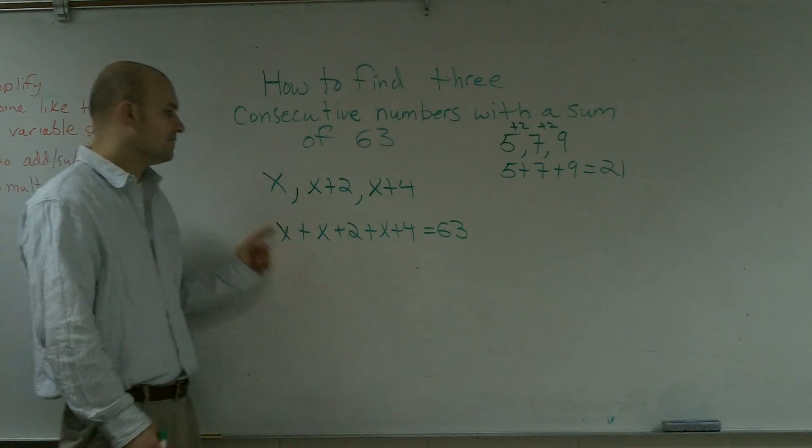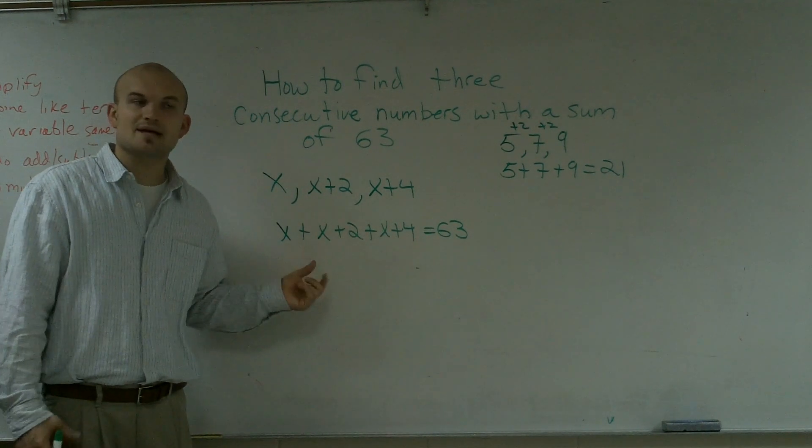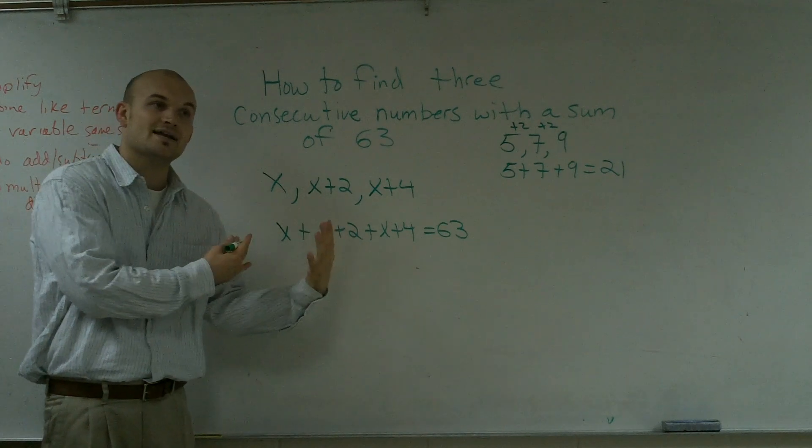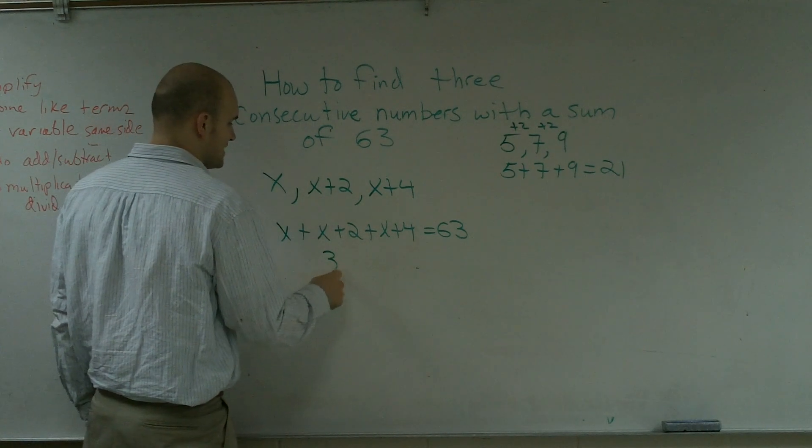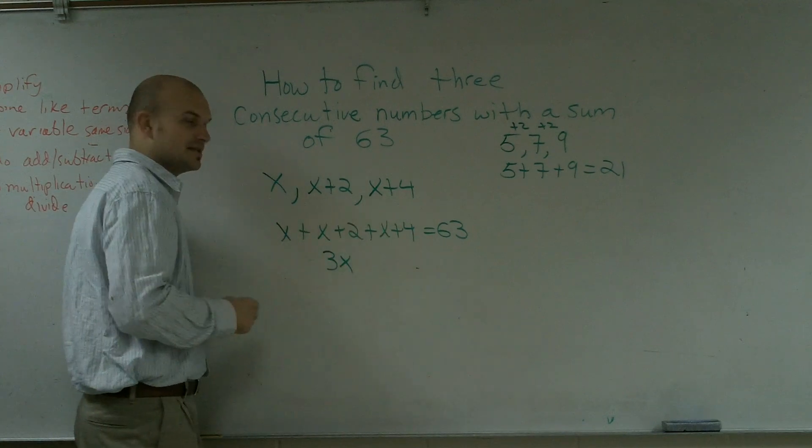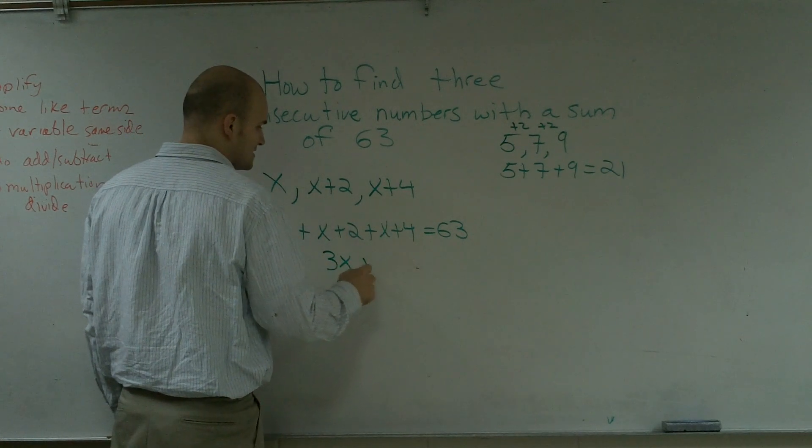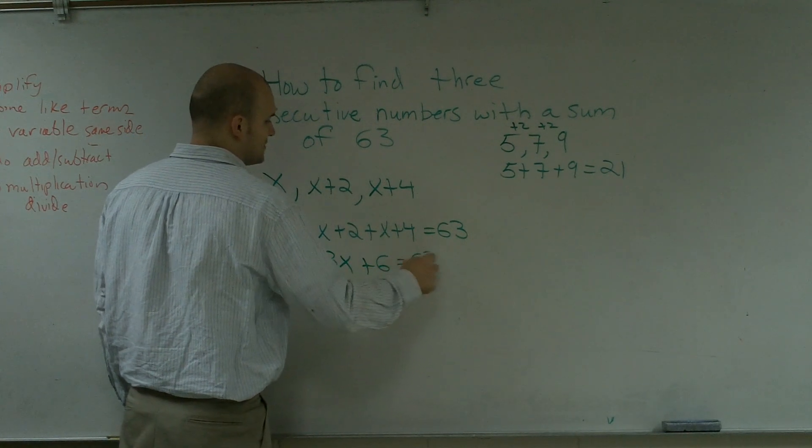Now, I have three x's on the same side. Since they're on the same side, I can combine them. So I get 3x, and I have my two numbers on the same side. I can combine them: 3x plus 6 equals 63.